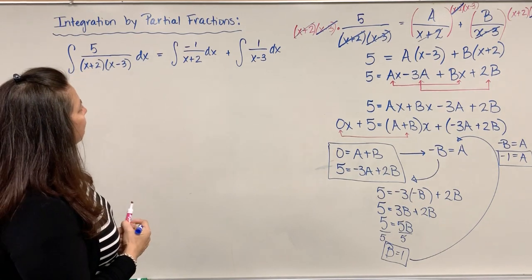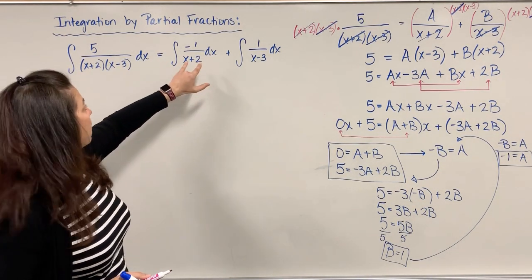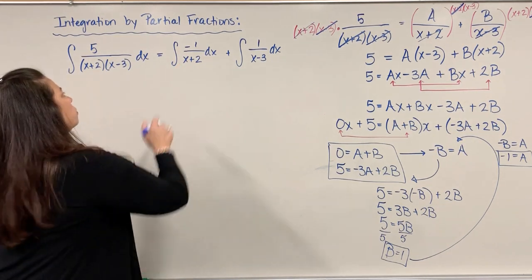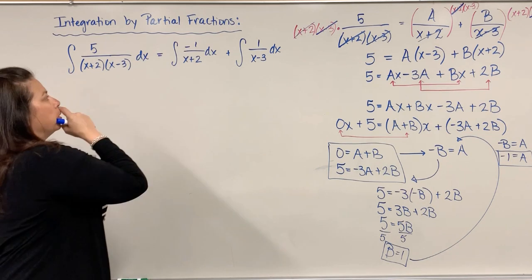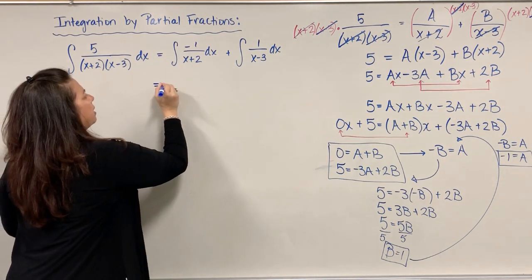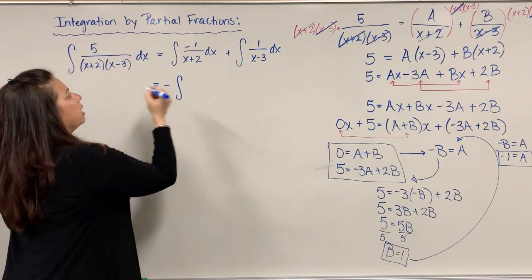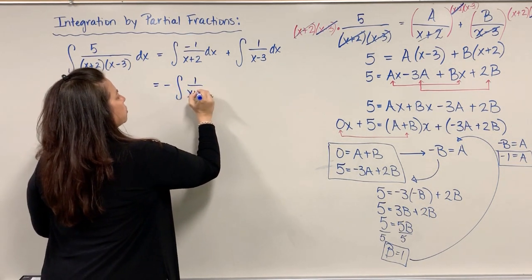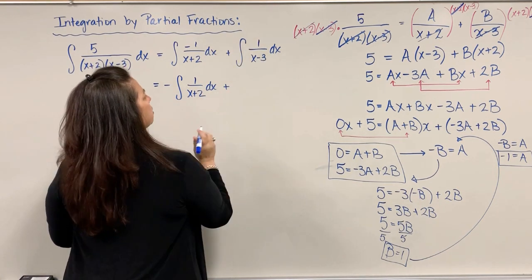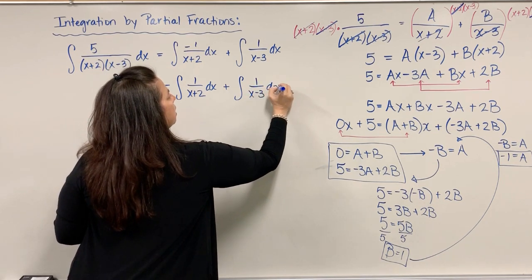Now I need to figure out what is the integral of each fraction with a separate linear factor. The negative in the numerator, let's pull that out. So we have -∫(1/(x+2))dx plus ∫(1/(x-3))dx.